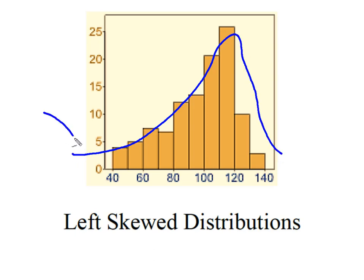Remember that we determine the direction of the skew by this elongated tail, and in this case the elongated tail is on the left side of the distribution.